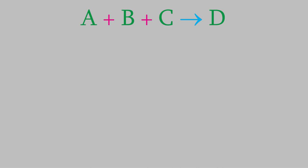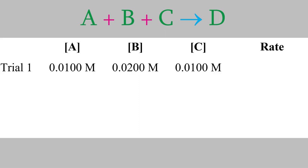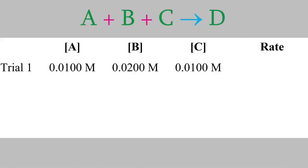We'll perform several trials of this experiment. For each trial, we need to know the concentrations we start with for each reactant. For the first trial, suppose we start with a concentration of 0.0100 molar for reactant A, 0.0200 molar for B, and 0.0100 molar for C. We also need to know the rate. This equation tells us we need to measure the change in concentration of one of the reactants or products and the amount of time it takes. We also divide by the coefficient from the balanced reaction. It doesn't matter which reactant or product we choose to measure, since each should give us the same result.